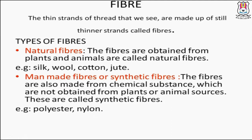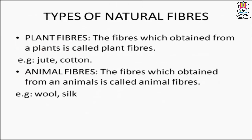Natural fibers jo hum logo ko naturally provide karte hai — jaise plants and animals se — unko natural fibers bolte hai. Synthetic or man-made fibers me hum log koi bhi plant ya animal source nahi karte; chemically naya fiber banta hai — usko bolte hain synthetic fiber or man-made fiber. Examples: polyester and nylon.